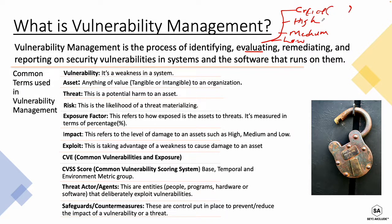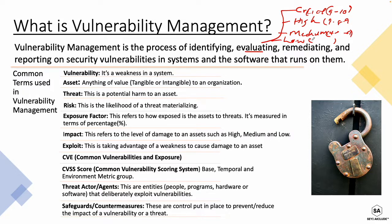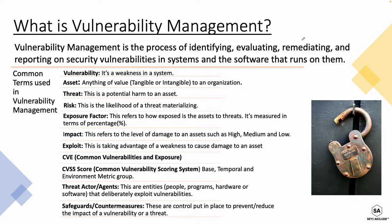How do we determine the scoring? There's a scoring system called the Common Vulnerability Scoring System, currently at version 3.1. It uses a scoring matrix to classify vulnerabilities by severity level. Critical is scored 9.0–10.0, high is 7.0–8.9, medium is 4.0–6.9, and low is 0.1–3.9. These scores are used to prioritize the remediation of vulnerabilities.